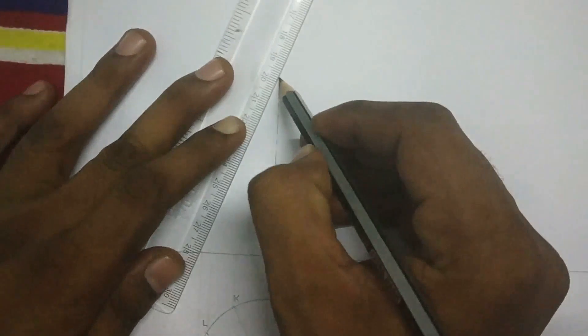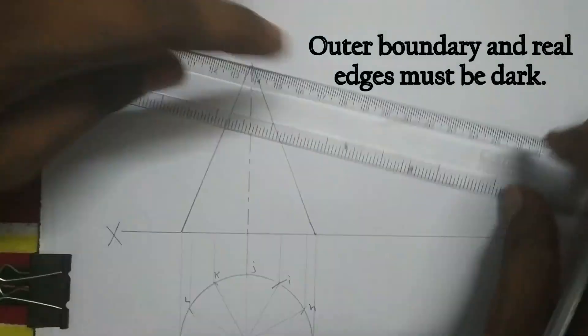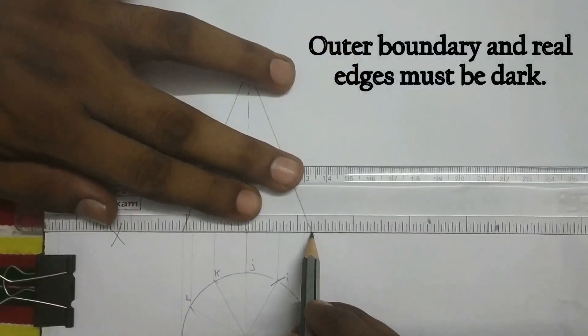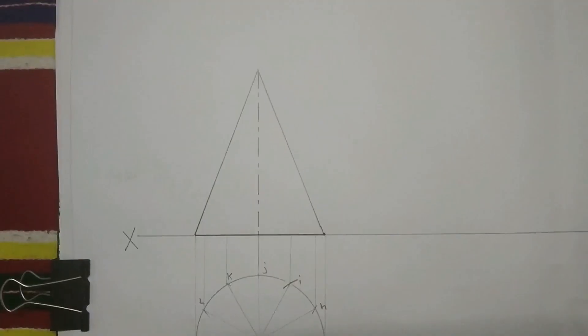Then connect O dash to A dash, O dash to G dash, and G dash to A dash. That is nothing but the outer boundary.